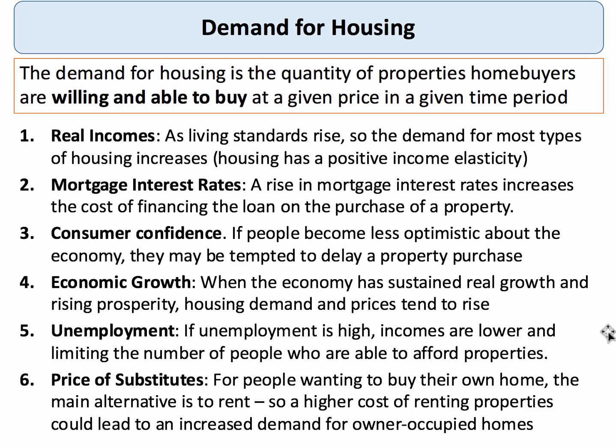The price of substitutes is also an important demand side factor. For most people the main alternative to buying a home through a mortgage is to rent. If the price of renting increases substantially, that increases the cost of a substitute and therefore may shift some people more into the owner-occupied market. Conversely, if the price of renting falls, people may decide not to buy their own home and choose to rent instead. These are the key demand side factors in the market.